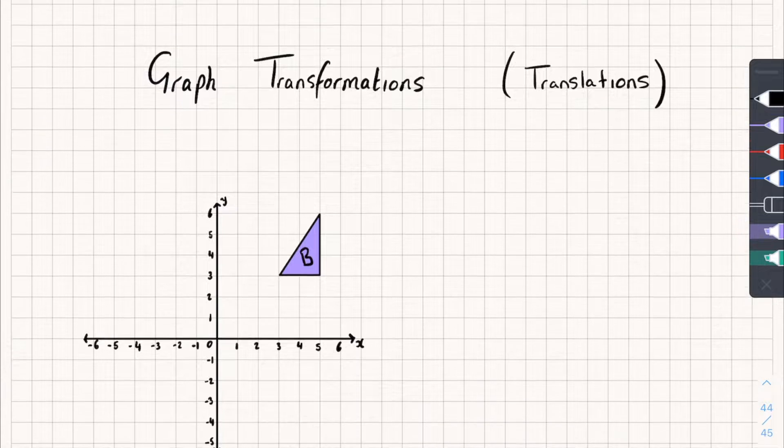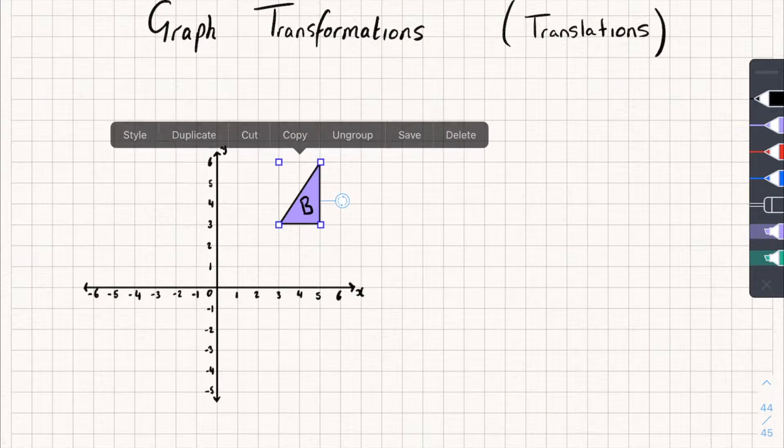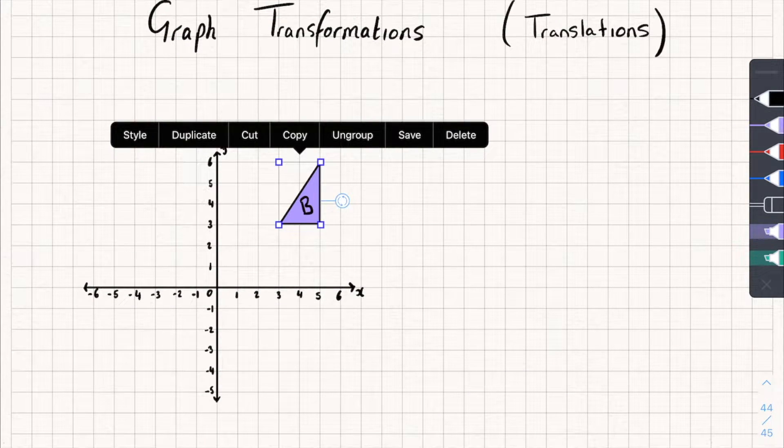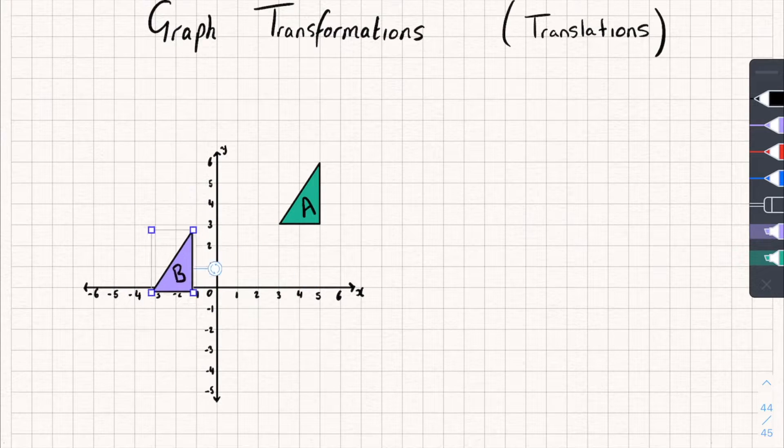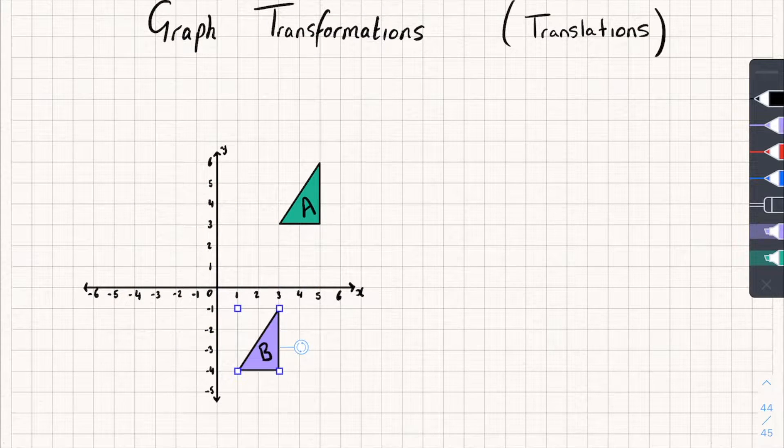So let's start off with what is a translation. Well say we have a shape, so I've drawn a couple on this graph here, and I just move it around the graph or the plane like this. That is called a translation.